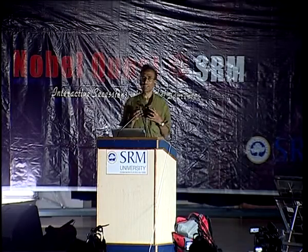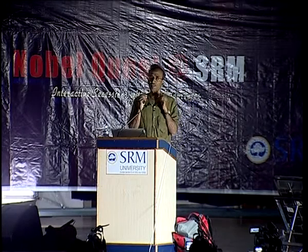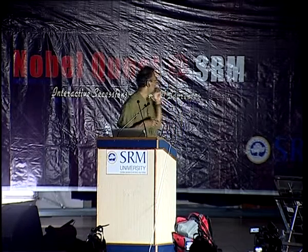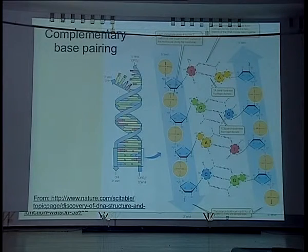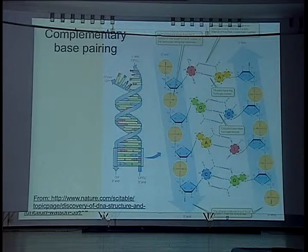To understand how proteins are made: proteins are made using the information in our genes. Our genes are made of DNA, and as I pointed out, they consist of four different types of building blocks.